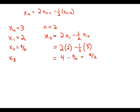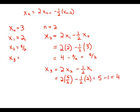Now we need to follow that same process to find x sub 3. So x sub 3 equals 2 times the number before it, which is now x sub 2, minus 1 half of the number 2 before it. So that's x sub 1. So that is 2 times 5 halves minus 1 half times 2. So this is 5 minus 1, which is 4. And this is answer choice C.